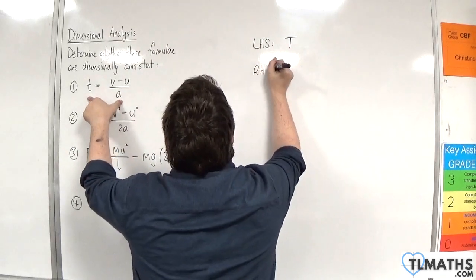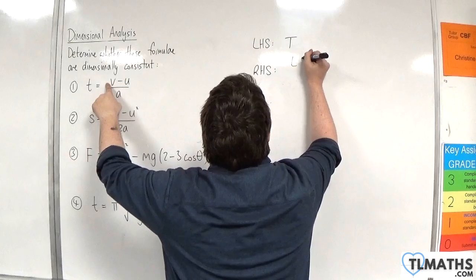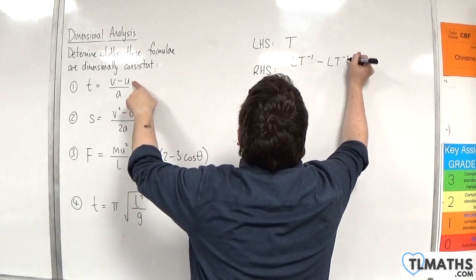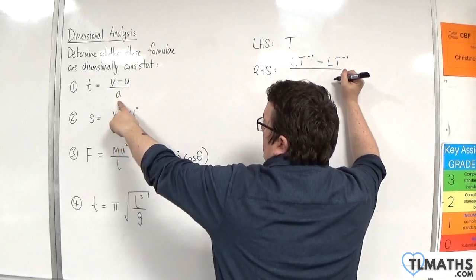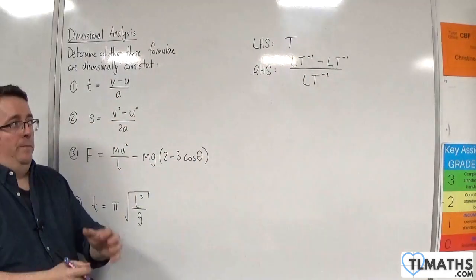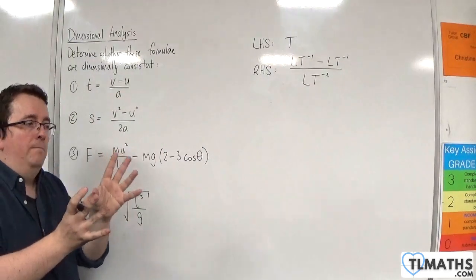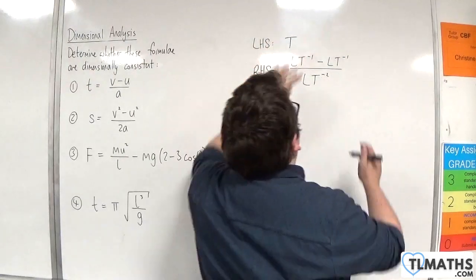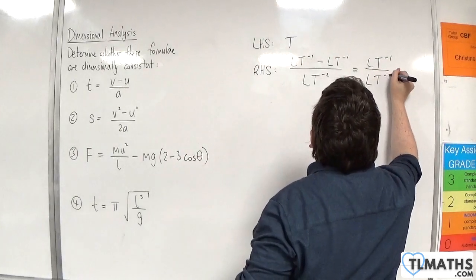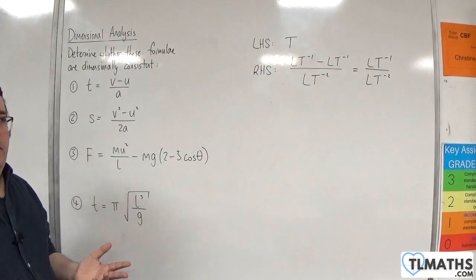On the right-hand side we have v, which is a velocity — in metres per second that is LT⁻¹. Then we take away a velocity, which is also LT⁻¹, and divide by a, which is acceleration — metres per second per second — which is LT⁻². Now, when doing this, you're not writing LT⁻¹ take away LT⁻¹ equals zero. That's not what we're saying. If the two things being subtracted were completely different dimensions, you wouldn't be able to combine them, so it would be dimensionally inconsistent.